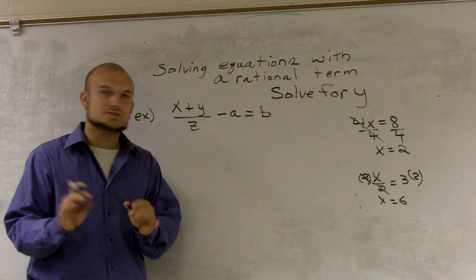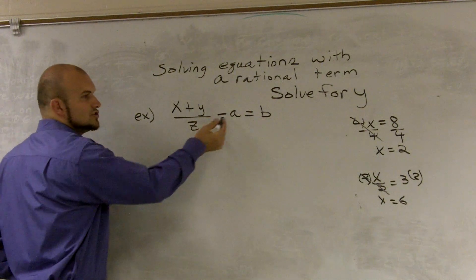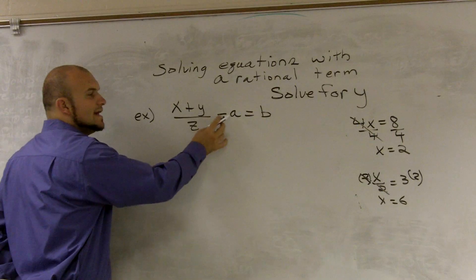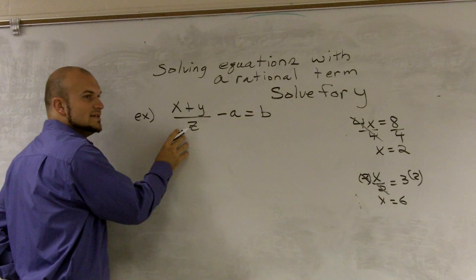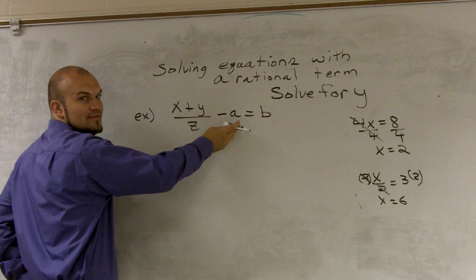Now, there's two different ways you could do it. You could initially multiply by the z right now. However, what you have to notice is there's two terms on the side. There's an x plus y over z and there's an a. So if you're going to multiply by z right now, you have to multiply the z by the x plus y and the z by the negative a.